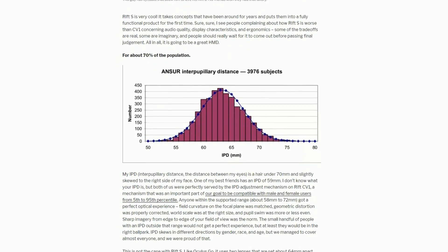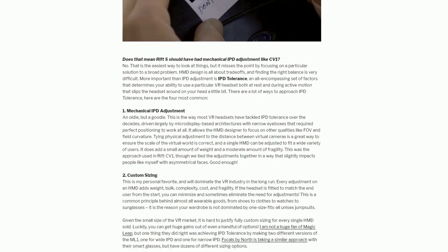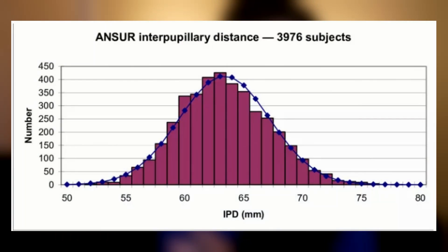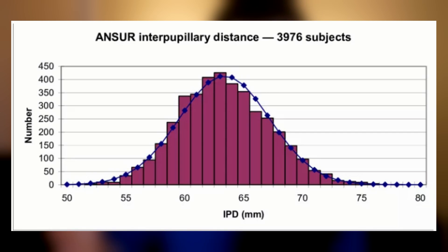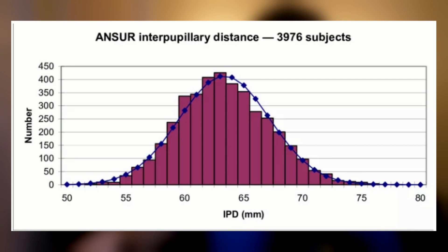In the post, he goes in depth about what the IPD — the interpupillary distance — actually means, and he ascertains that about 30% of the population will not be able to use the Rift S because they are outside the range it can accommodate. He also posts a very interesting graph showing the normal distribution of IPD across a study population, and you can see that anything less than 60 or above 70 starts to get into the tail end of the curve.